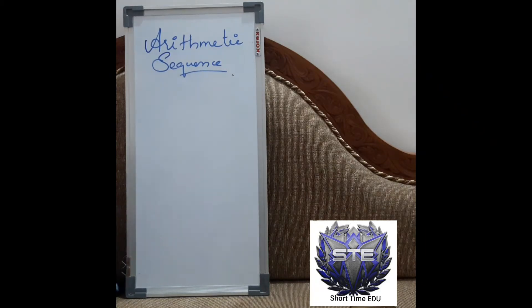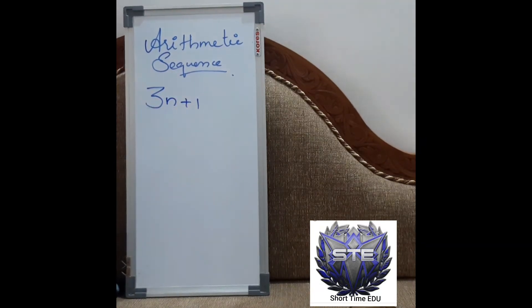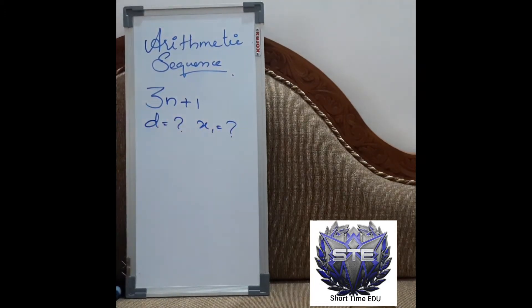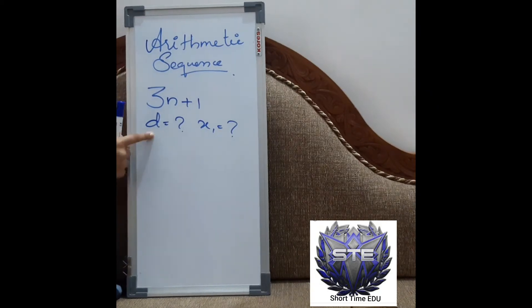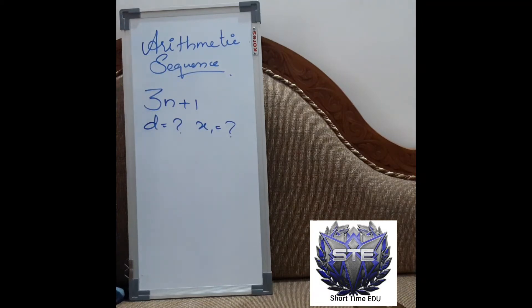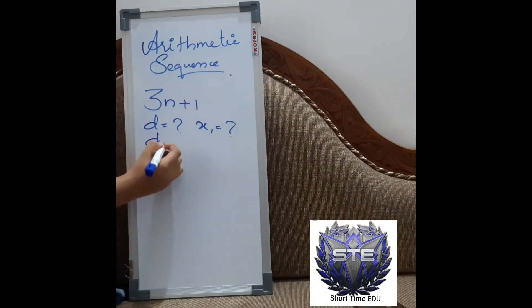If we get an algebraic expression, do you know how to write the first term and the common difference? For example, 3n plus 1 is an algebraic expression, or the nth term of an arithmetic sequence. What is d? What is x1? The common difference d will always be the number along with the variable n. Here, the number along with n is 3, so the common difference is also 3.